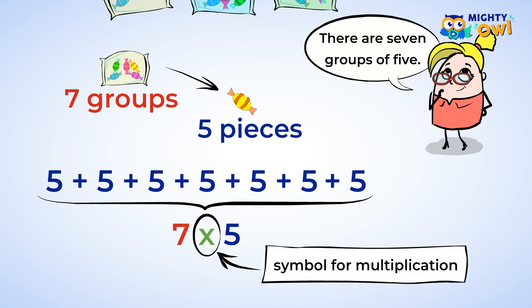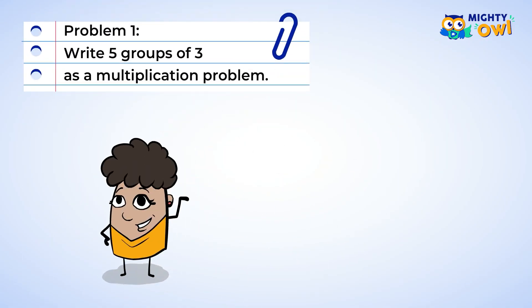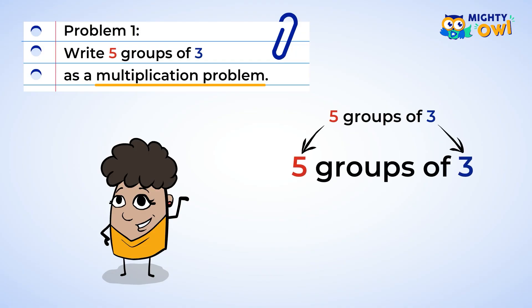Here are some exercises to practice writing multiplication problems. You're asked to write five groups of three as a multiplication problem. You can start by changing the words into numbers, then change the words 'groups of' into the multiplication symbol. Great work — you wrote five groups of three as the multiplication problem five multiplied by three.